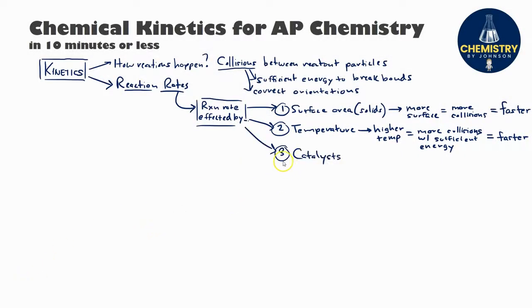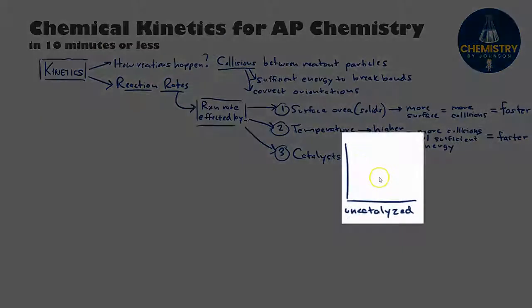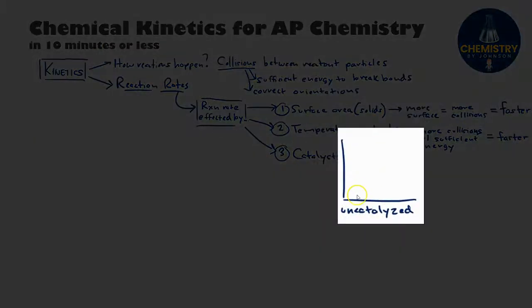Another factor is the presence of a substance known as a catalyst. If a catalyst is present where the reaction is taking place, it's going to speed up the reaction rate through a process known as catalysis. Catalysis can happen in a number of different ways, but regardless of the method, they all have the same effect. Let's take a look at an energy profile diagram to see how they work.